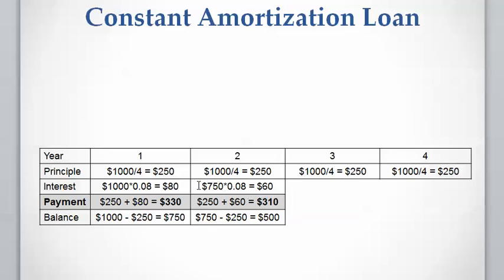For year two, the interest equals the balance multiplied by the interest rate. The balance is $750 — what remained after the borrower paid $330 at year one. So $750 multiplied by 8% gives $60 of interest. In total, the borrower has to pay $250 of principal plus $60 of interest, which comes to $310 at year two. The balance after payment is $750 minus $250, which equals $500.